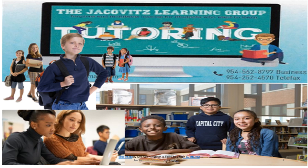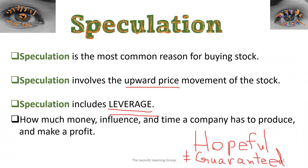We're back. This is a quick slide on how to think about stocks and what you're buying, and how to analyze and look at a balance sheet. Before we do, let's go over some common words. Speculation is the most common reason for looking at stocks because you are hopeful that the stock is going to go up. You need to understand leverage and how the company is using it.